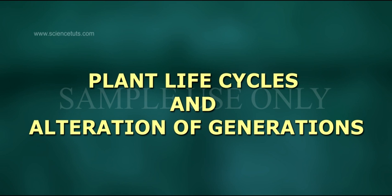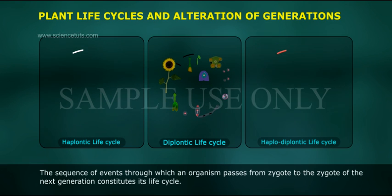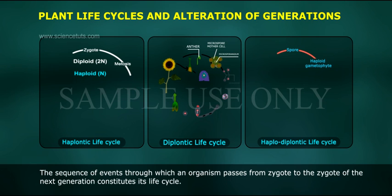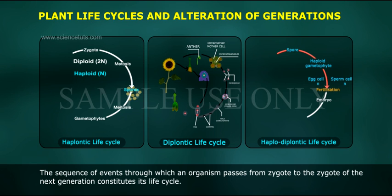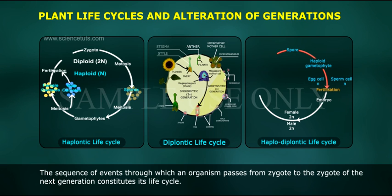Plant Life Cycle and Alternation of Generations. The sequence of events through which an organism passes from zygote to the zygote of the next generation constitutes its life cycle.